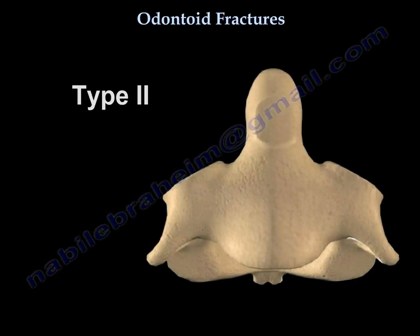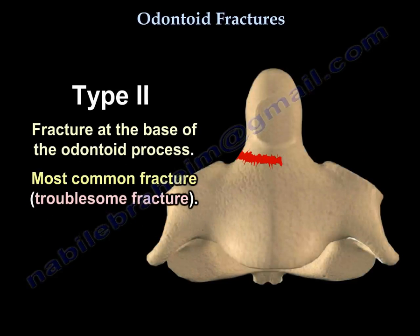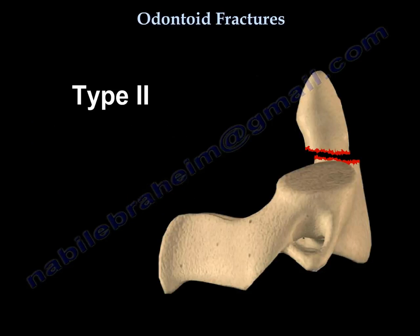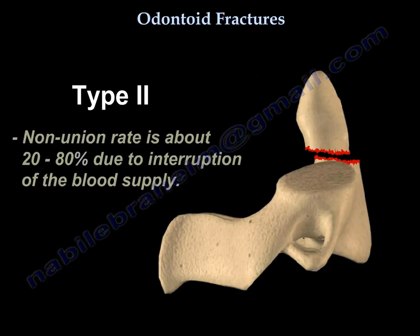Type 2 fracture is a fracture at the base of the odontoid process. Type 2 is the most common fracture and it is a troublesome fracture. The non-union rate is about 20% to 80% due to interruption of the blood supply.